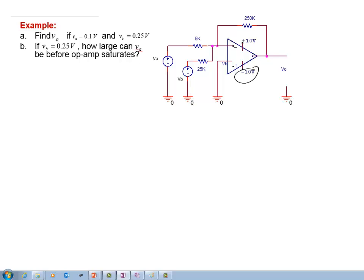In the first part, we need to calculate V sub 0 if V sub A is equal to 0.1 volts and V sub B is 0.25 volts. This first part can be solved by writing a node equation and the node equation here is